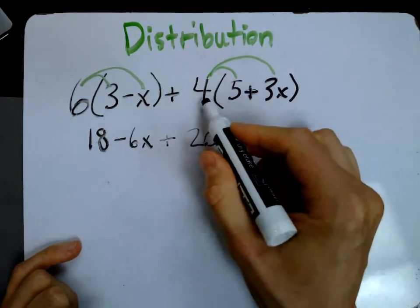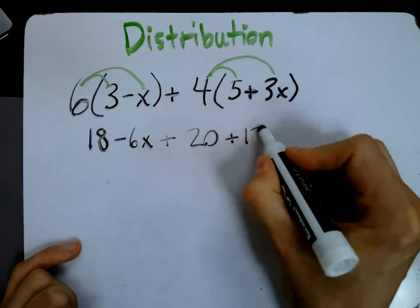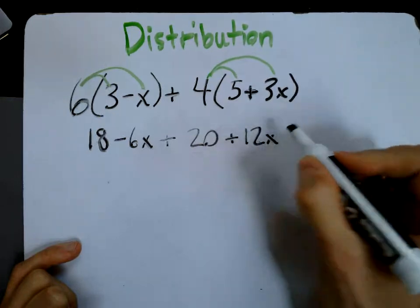I'm going to rewrite this plus down here, and then four times three times x—well, four times three is 12, so that's 12 times x, or 12x.